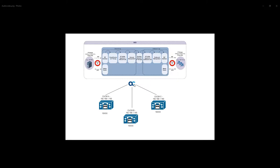In our scenario, we have an AudioCodes device hosted in a virtual machine and three call manager clusters — A, B, and C. The IP address of call manager cluster A is 192.168.1.150, call manager B is 192.168.1.155. The destination ranges are: 10x series for cluster A, 15x series for cluster B, and 16x series for cluster C.